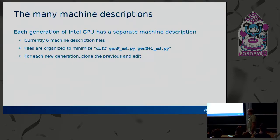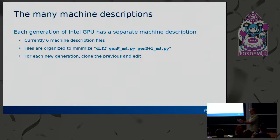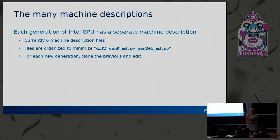I ended up creating six different machine description files to cover all the various generations of Intel's GPU architectures. The files are organized so that it's really easy to just diff one generation's machine description against the next — you get a very compact output of everything that changed from Gen 7 to Gen 8. It also makes it easy to add the next generation: just copy the old one and make edits to add new features, remove things that use removed features, and so on. Once I got the first machine description written, cranking out all the rest was pretty easy. It's always the most work to make the first one.